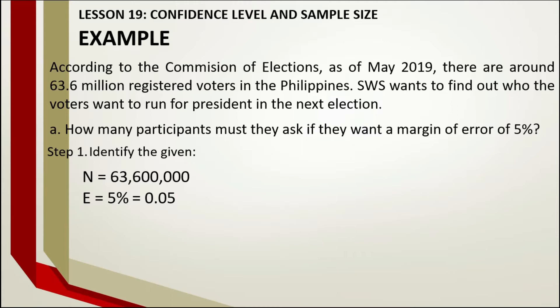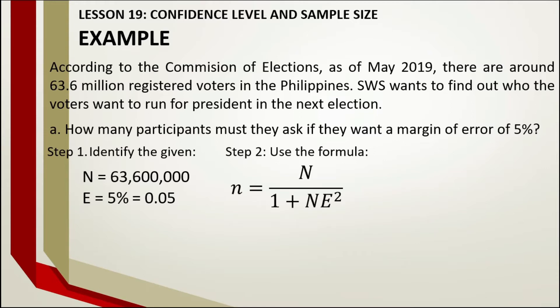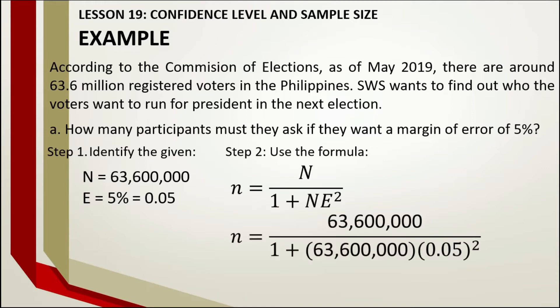Now that we have capital N and letter E, all we have to do is use the formula and directly substitute. Use a calculator to determine the answer. The result is 399.9974. However, when it comes to sample size, we always round up the answer.